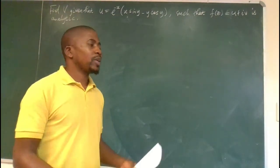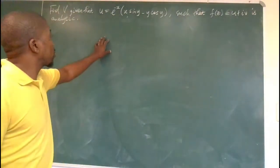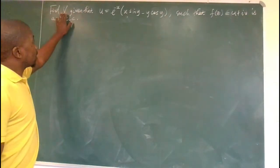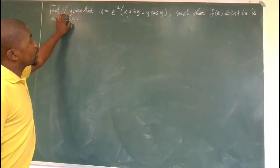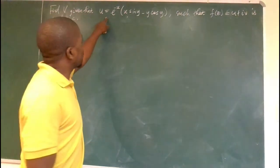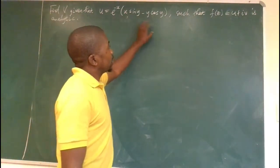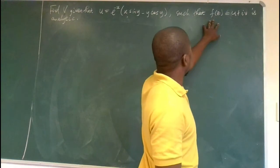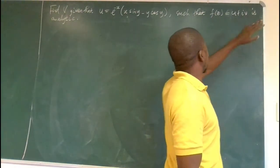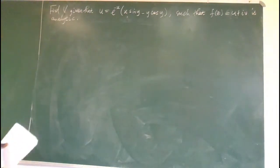Hello everyone. We need to solve this one again. We need to find the function v, given u is equal to xe^(-x)sin(y) - e^(-x)y·cos(y), such that the complex-valued function f(z) = u + iv is analytic.